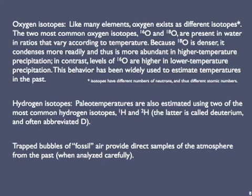Do you really have to know how isotopes are used to analyze ice? Probably not — the process doesn't matter in the sense of being on life's test. But I'm uncomfortable just giving you the numbers as if they come from magic. Even though oxygen doesn't undergo radioactive decay, it exists as different isotopes naturally. Isotopes have different numbers of neutrons and thus different atomic masses, but they're always of the same element. The two most common oxygen isotopes are O16 and O18. These two isotopes are present in water in ratios that vary according to temperature. Because O18 is denser — it has two more neutrons — it condenses more readily out of the atmosphere, and thus it's more abundant in higher temperature precipitation. The amount of O16 is higher in precipitation at lower temperatures.